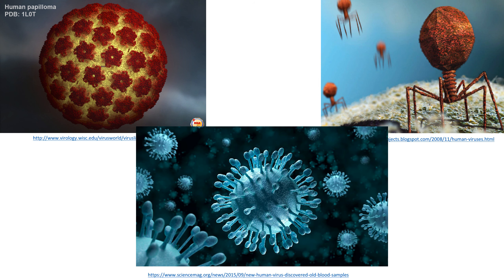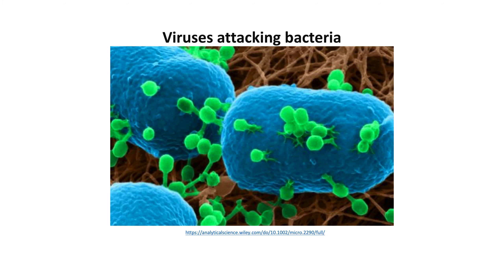Some scientists consider viruses to be a life form. However, since they do not have a regular cell structure and cannot reproduce unless they have infected a host cell, they are considered to be genetic replicators on the edge of life. Viruses are small — they are infectious agents that take advantage of all types of life forms, from animals and plants to microorganisms and even bacteria. In fact, viruses are about a hundred times smaller than bacteria.